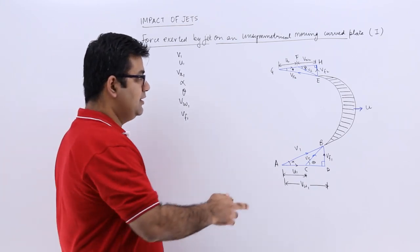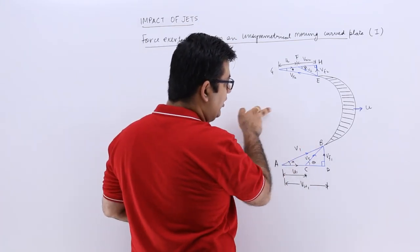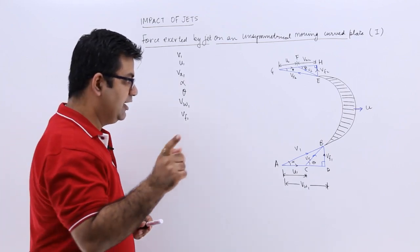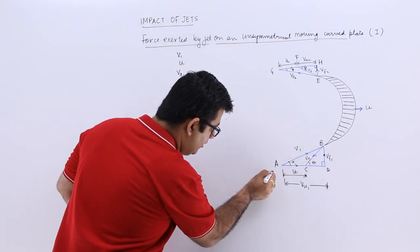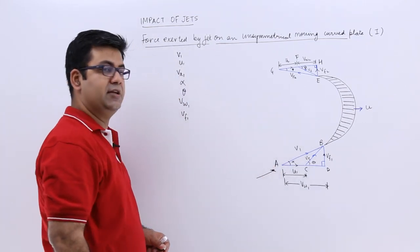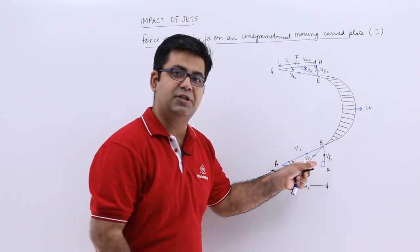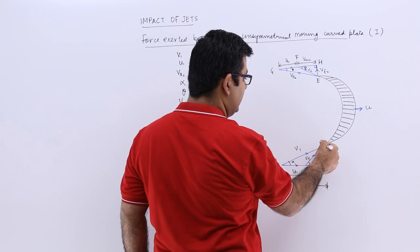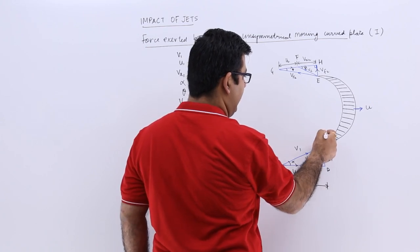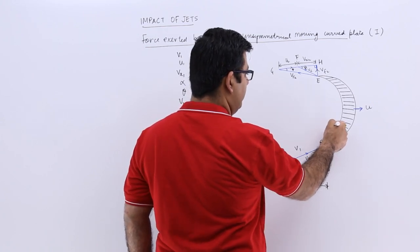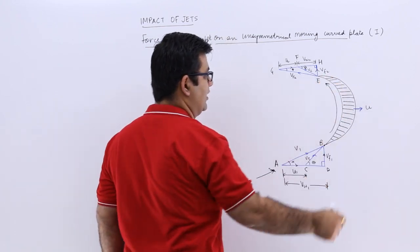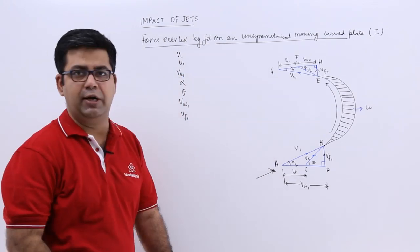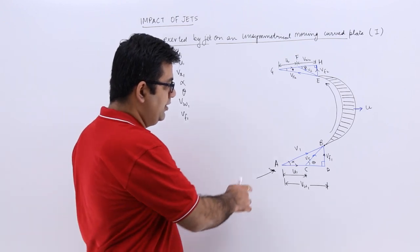The curved blade is moving in a horizontal direction, but the jet of water is being thrown in a tangential direction. This is how the jet enters at the tip of the blade or the plate and moves over the curved plate, going out in a tangential direction as well.